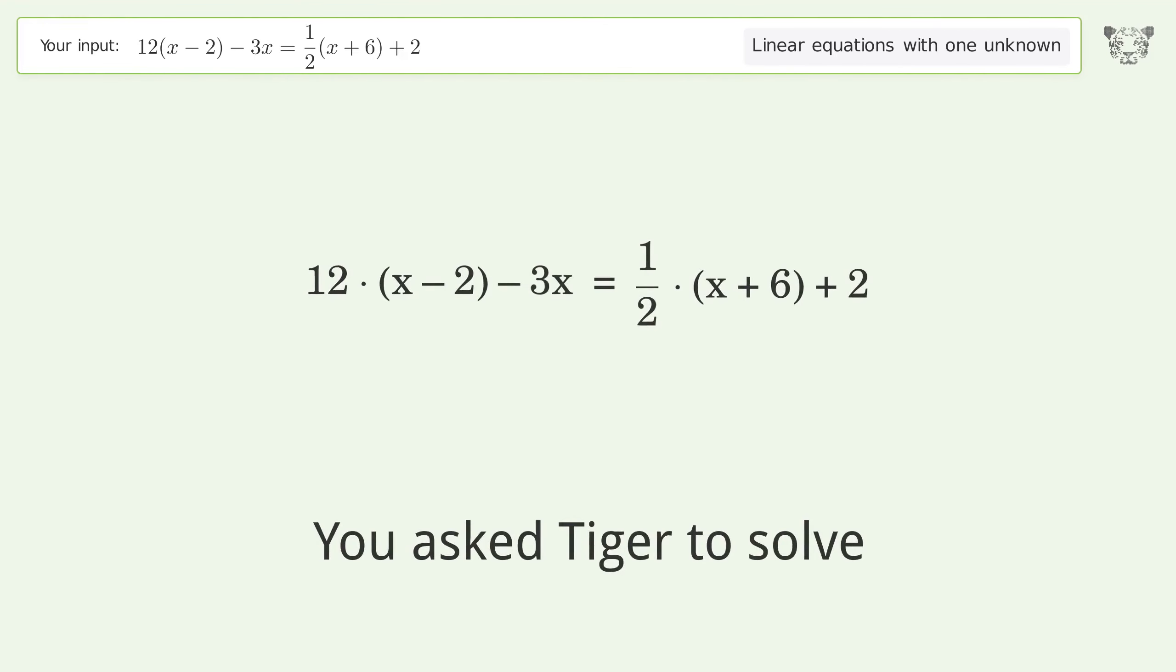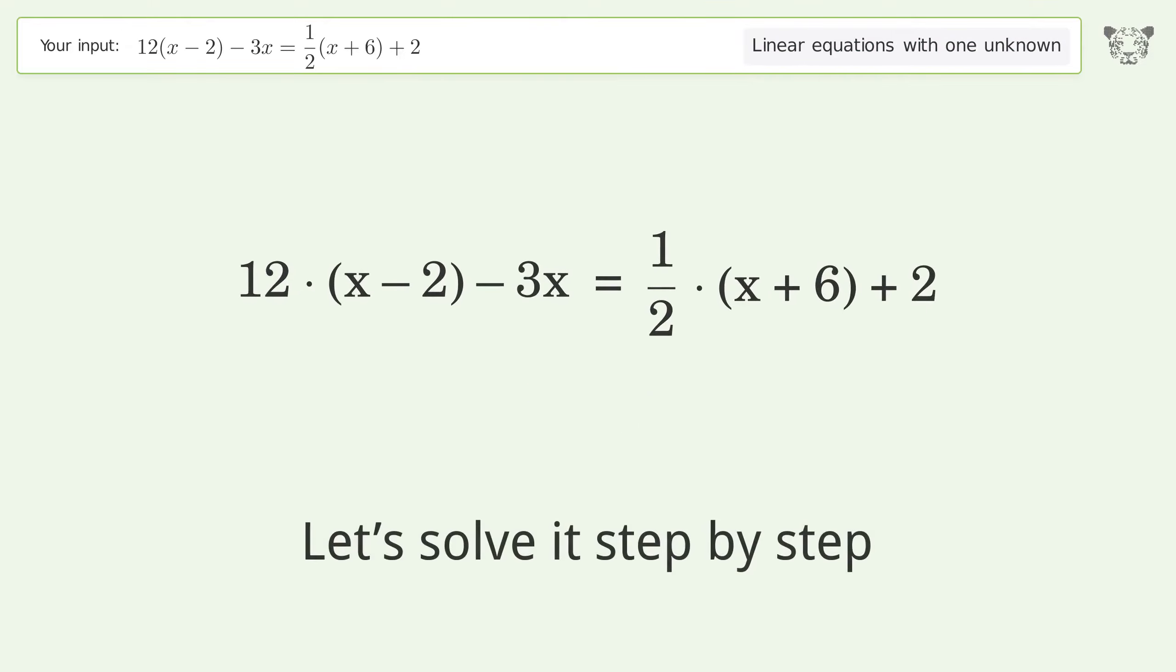You asked Tiger to solve this, which deals with linear equations with one unknown. The final result is x equals 58 over 17. Let's solve it step by step.